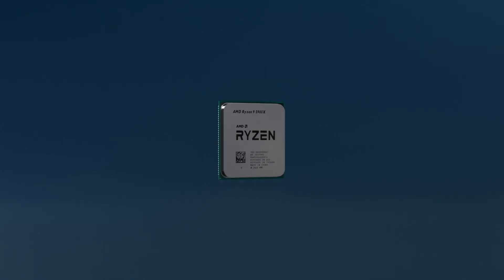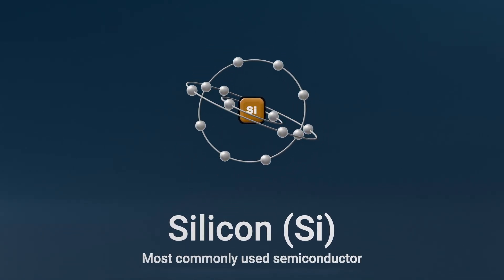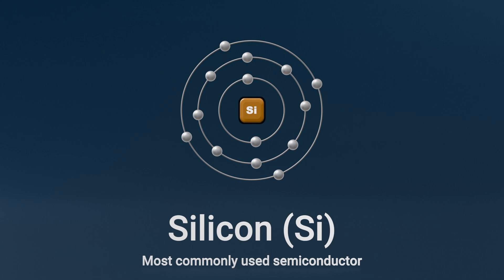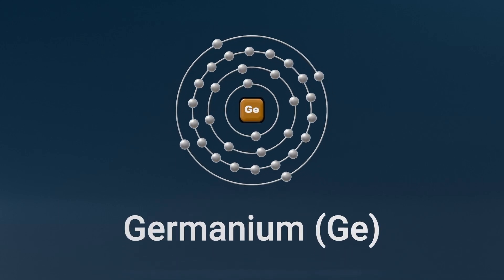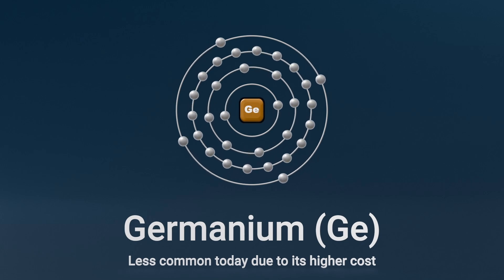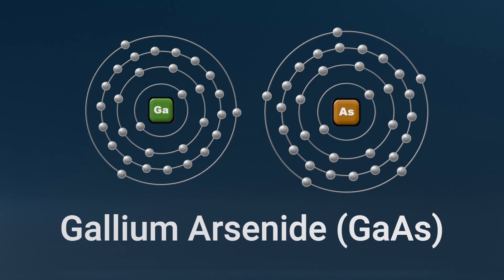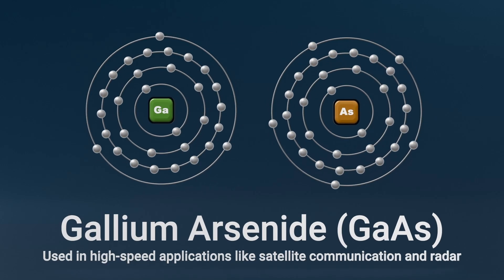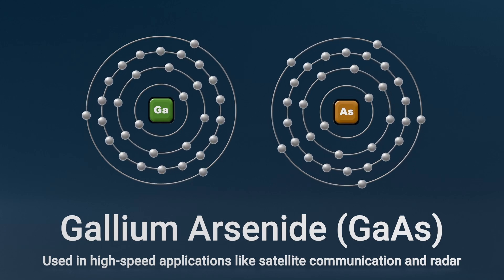Here are some key types. Silicon is the most commonly used semiconductor, forming the basis of most modern electronics. Germanium is historically significant, but less common today due to its higher cost. Gallium arsenide is used in high-speed applications like satellite communication and radar.